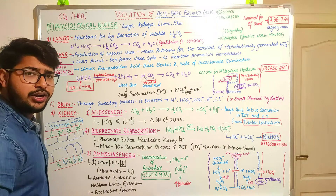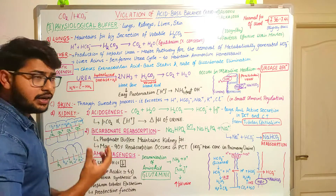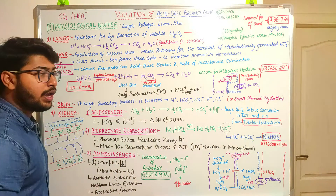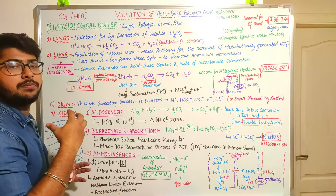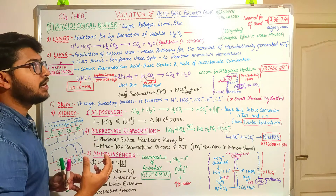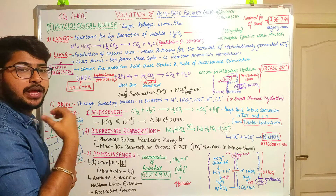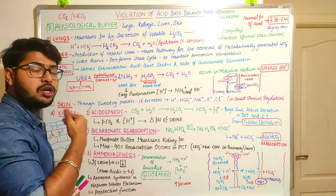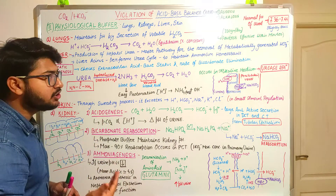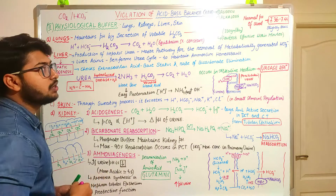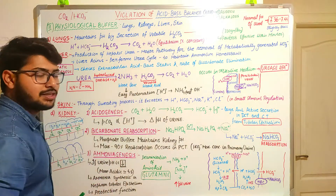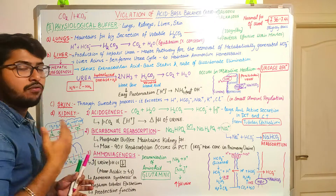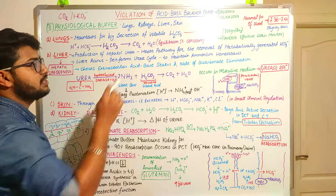From the word 'physiology,' it means normal function. Our body contains certain organs — the lungs, kidneys, liver, and skin. These are the important excretory systems that help to maintain the homeostasis of acid and base, regulating how much acidic and basic content the body requires. These organs have normal physiological functions, and according to the physiological buffer, we have these four organs: lungs, kidneys, liver, and skin.